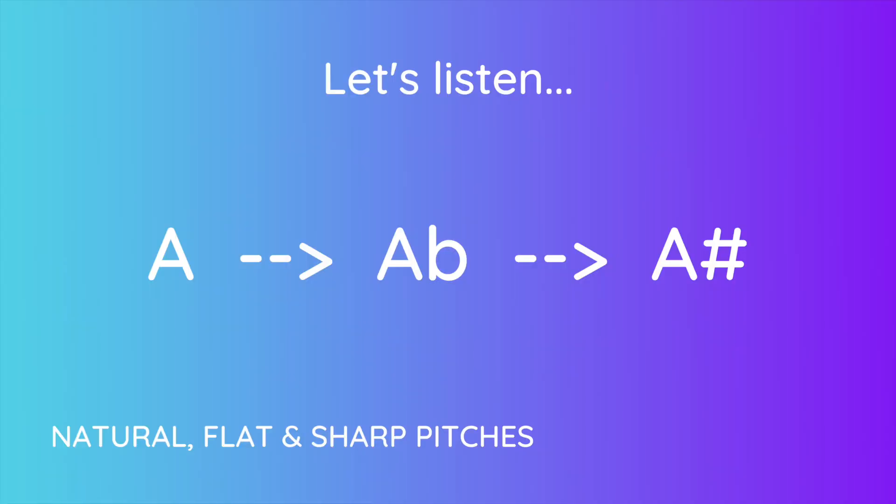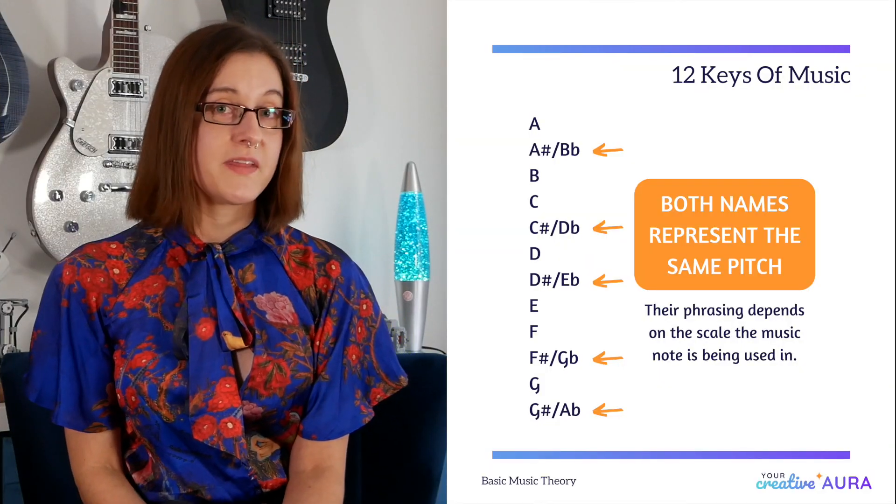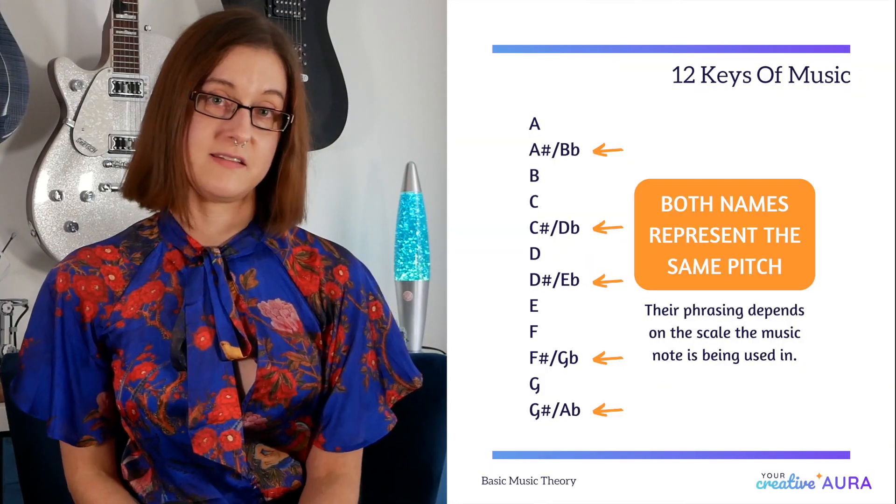For example, our natural pitch of A has a flat pitch — A flat — and a sharp pitch — A sharp — and these three notes produce different sounds. So let's listen to these three: from A to A flat and then A sharp. With consecutive letters of the musical alphabet, the sharp and the flat notes both represent the same pitch. However, depending on the key signature, they would be phrased differently.